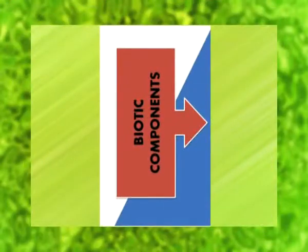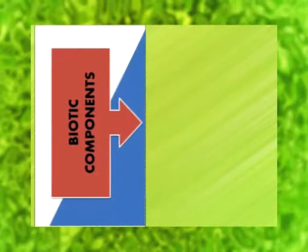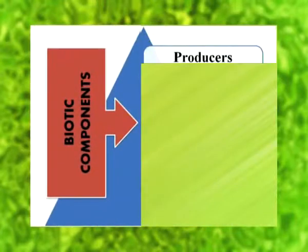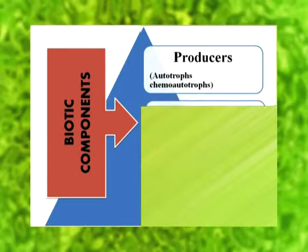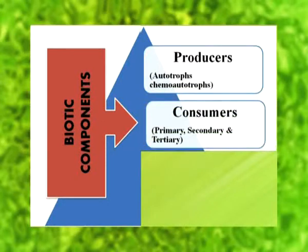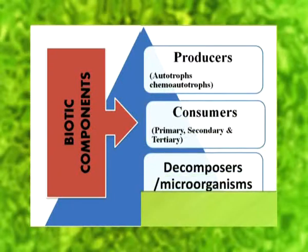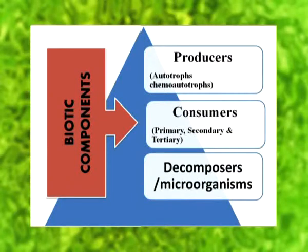Biotic components of ecosystem are of three kinds. Number one, producers — these are autotrophs and chemo-autotrophs. Number two, consumers — consumers are primary, secondary, and tertiary consumers. And decomposers, which we can call microorganisms.